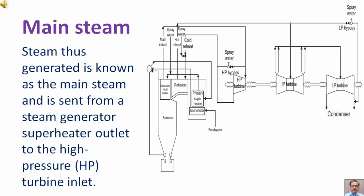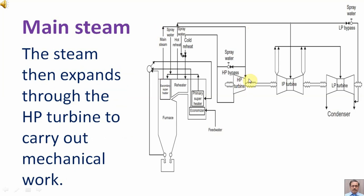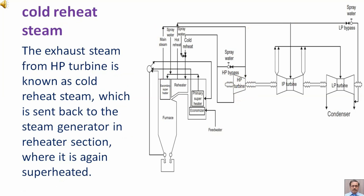Steam is sent from the steam generator superheater outlet to the high pressure turbine inlet. The steam then expands through the high pressure turbine to carry out mechanical work. The exhaust is also known as cold reheat steam, which is sent back to the steam generator reheater section, where it is again superheated.